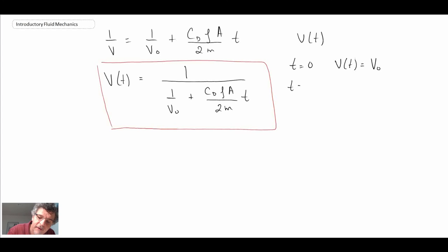And another limit that we have, let's say time goes to infinity. As time goes to infinity, the second term in the denominator here is going to get very, very large. And consequently, velocity at time equals infinity will equal zero. Asymptotically, it's going to approach zero.